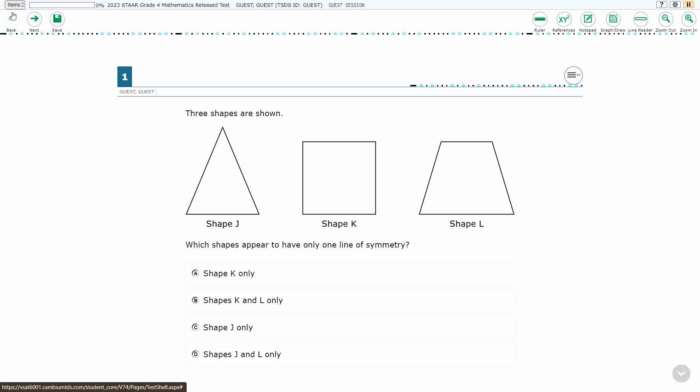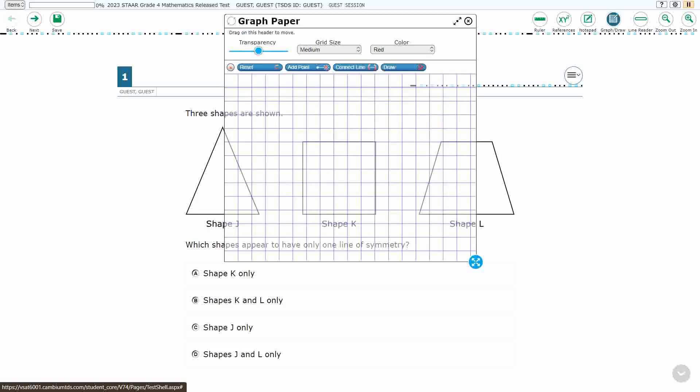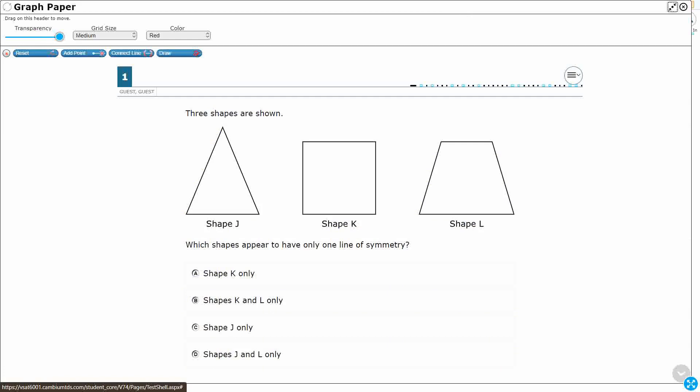So we've got three shapes here. We've got a triangle, we have a square, and we have a trapezoid, but they're just labeled shape J, K, and L. And here's the big question, which shapes appear to have only one line of symmetry?